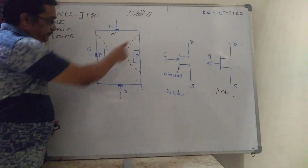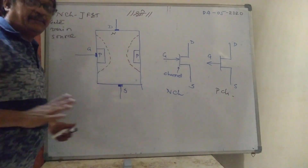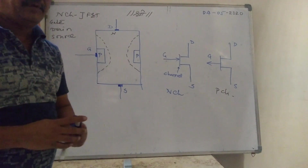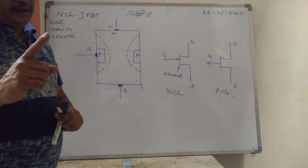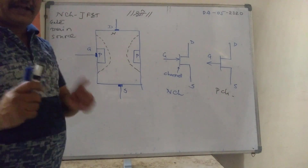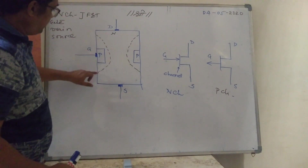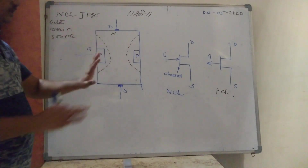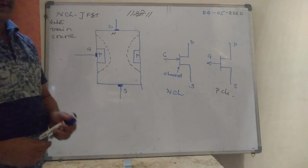These two P regions are internally connected with each other and the common terminal taken out is Gate. Other two terminals taken out are Drain and Source. This dotted junction region is known as the depletion region. As soon as a PN junction is formed, a depletion region is formed — as taught in the PN junction topic in the second unit. So this is the initial depletion region in the FET.